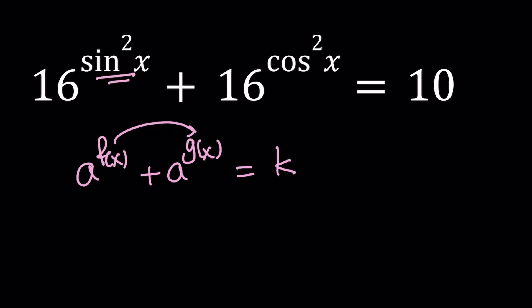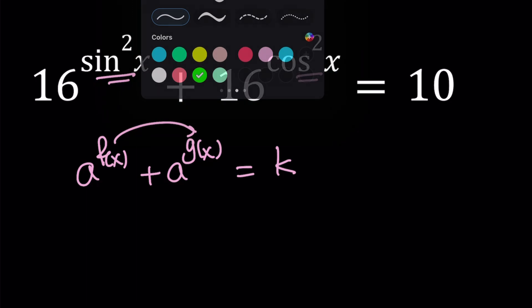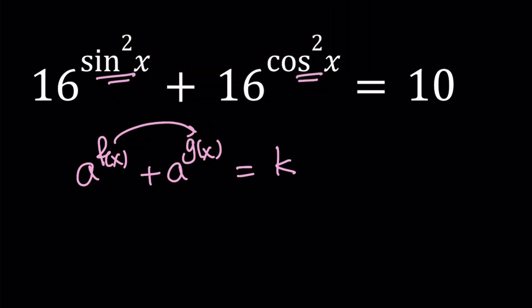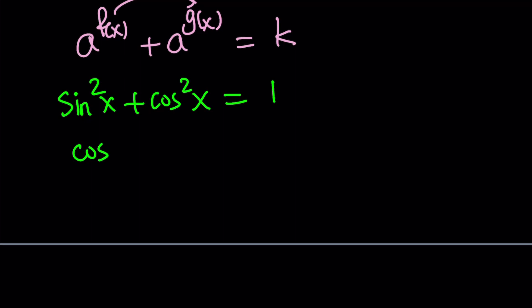And you must know this from trigonometry. One of the most important identities is that sine squared x plus cosine squared x equals 1. So this allows you to write one in terms of the other. Let's write cosine squared x as 1 minus sine squared x.